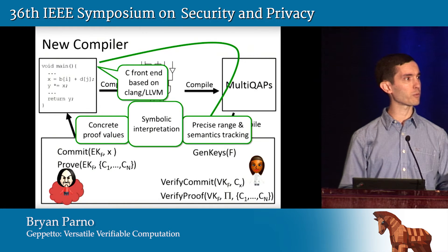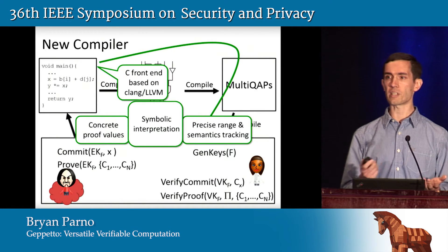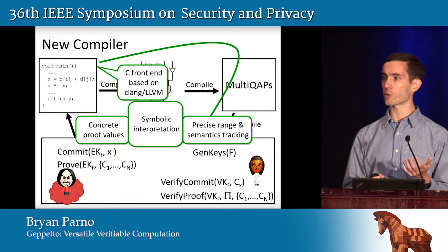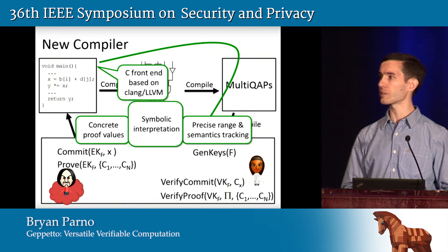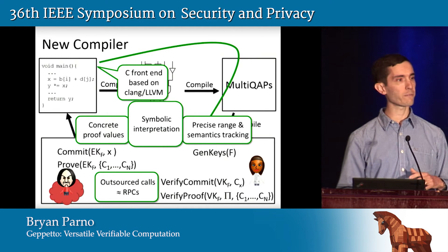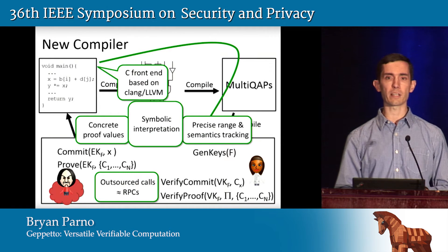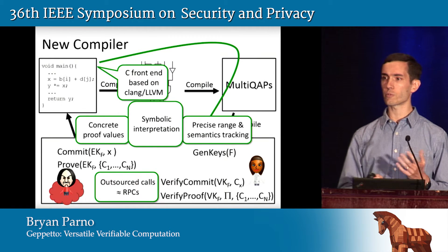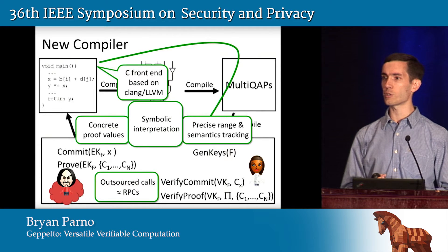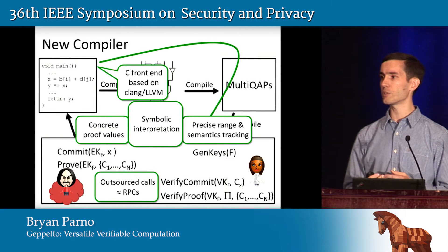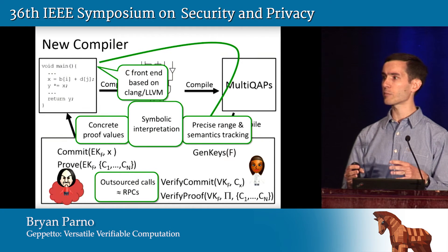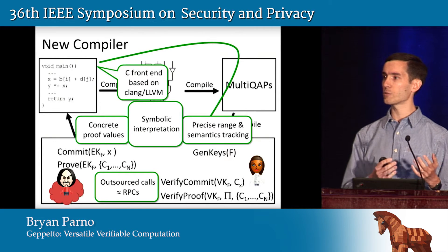When it comes time for proof generation, we use the same engine but instantiate values with concrete values and use those to generate commitments and proofs. From the verifier's perspective, this integrates very nicely with existing code. All you have to do is label the function you want to outsource and it behaves like an RPC — your program executes until it reaches that point, the values are outsourced, they come back, the underlying machinery checks that all the computation was done correctly, and then passes those values back into your program which can continue executing normally.